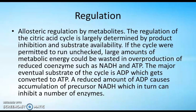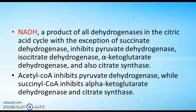The regulation of the TCA cycle involves allosteric regulation by metabolites. Citric acid cycle regulation is largely determined by product inhibition and substrate availability. If the cycle ran unchecked, large amounts of metabolic energy would be wasted in overproduction of reduced coenzymes such as NADH and ATP. The major eventual substrate is ADP, which is converted to ATP; a reduced amount of ADP causes accumulation of NADH, which can inhibit a number of enzymes.